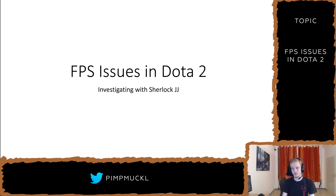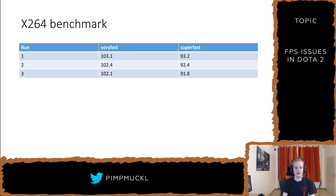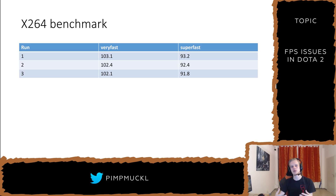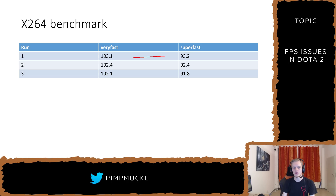So first of all, let's talk about some background. I was benchmarking OBS and Xsplit to see which of these programs is really fast, or maybe not so fast. And I got some values which make no sense. Basically, these values should be swapped.